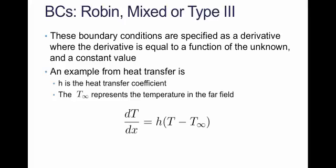Robin boundary conditions, these are the mixed boundary conditions. They are also specified as a derivative of the unknown, but that derivative is no longer equal to a known function as it was for Neumann boundary conditions. In this case, the derivative is equal to a function of the unknown that you're looking for. One example from heat transfer is that the change of temperature with respect to x can be equal to the heat transfer coefficient times the temperature right there at the wall minus a temperature that's far away, but a known value - T ambient is a known value.